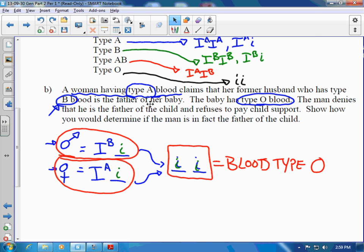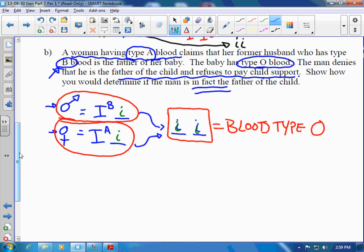So the man denies that he is the father of the child and refuses to pay child support. Show how you would determine if the man is in fact the father. Well, there's no way that we can prove that this man is the father, but we are able to prove that this man and this woman are able to have this child. Was it in fact this man? We are not sure.